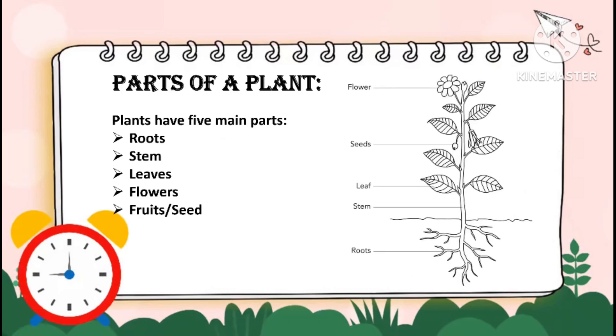Parts of plants. Plants have 5 main parts: roots, stems, leaves, flowers, fruits and seeds.